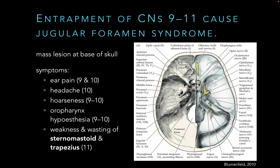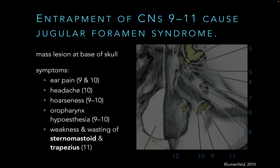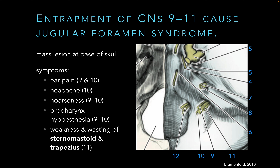Because cranial nerves 9 through 11 exit through the jugular foramen together, they can be compressed together by any mass lesion near the base of the skull — this gives us jugular foramen syndrome. Cranial nerves 9, 10, and 11 exit together, and when compressed, this creates a collection of symptoms: ear pain from cranial nerves 9 and 10, hoarseness, decreased sensation in the pharynx, weakness in muscles for speech, and compression of cranial nerve 11 causes weakness and wasting in the sternomastoid and trapezius muscles. This concludes our discussion of cranial nerves 9 through 12.